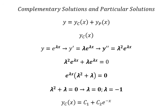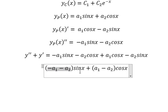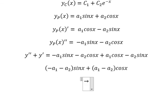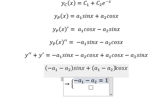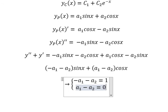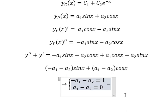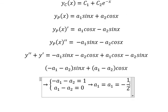Looking at the right-hand side, we only have sine x, so the coefficient of sine x equals 1 and the coefficient of cosine x equals 0. This gives us a system of equations: negative a1 minus a2 equals 1, and a1 minus a2 equals 0. Solving the system gives a1 equals a2 equals negative one-half. We substitute negative one-half back into y_p.